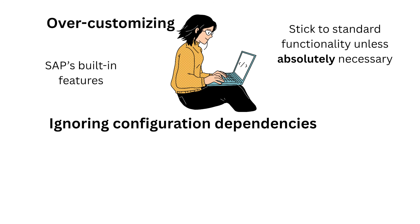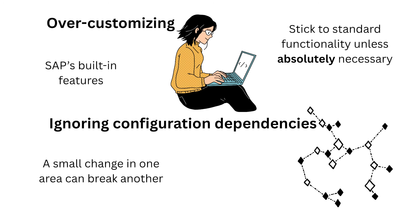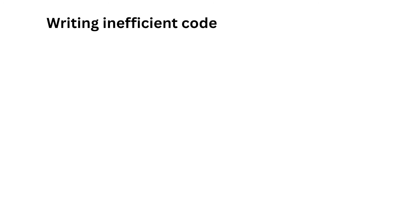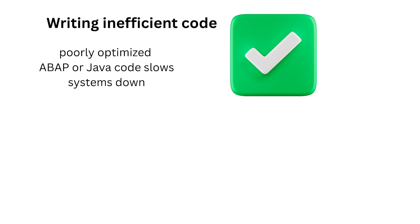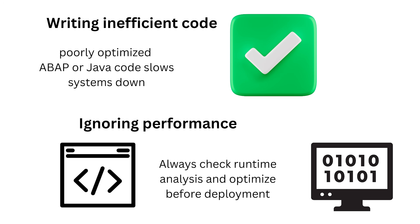Mistake 8: Ignoring configuration dependencies. SAP modules are connected — a small change in one area can break another. Always analyze dependencies before modifying anything. Mistake 9: Writing inefficient code. For technical beginners, poorly optimized ABAP or Java code slows systems down — learn and follow coding best practices. Mistake 10: Ignoring performance. Even if your code works, it might be too heavy. Always check runtime analysis and optimize before deployment.